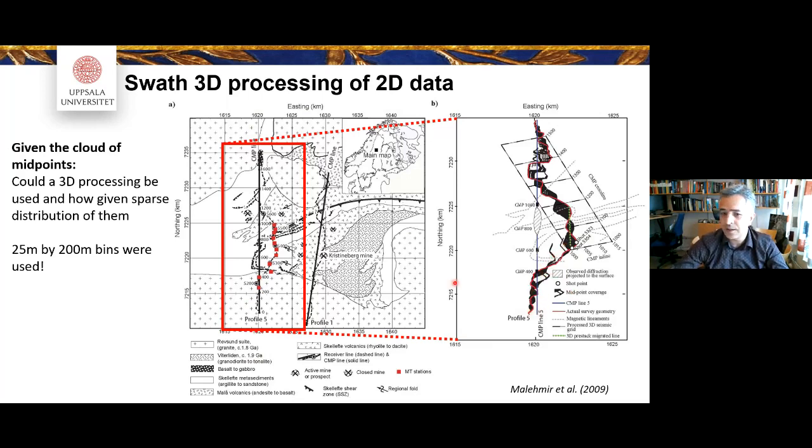So what we did then later, we said, okay, let's treat the data something differently. This is again the 2D line, the westernmost line. These are the 2 lines that we were looking, line 1 and line 5. And if you carefully look at these lines, it's pretty much crooked. And the red line shows the geometry of the line. What you see here with the black points, these are clouds of the midpoints. The midpoints were really resampling the subsurface. And we decided then to treat the data 3D. Let's treat the data 3D and see what we get.